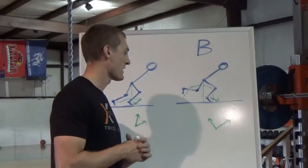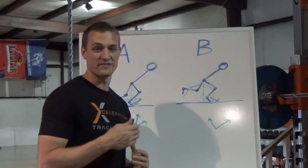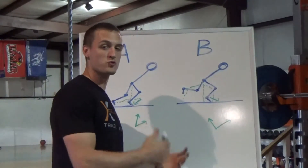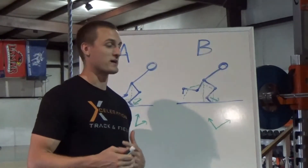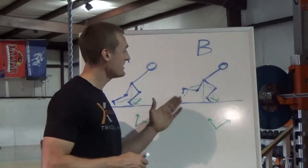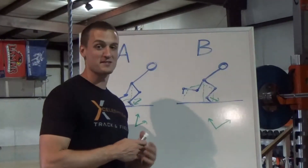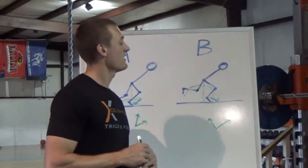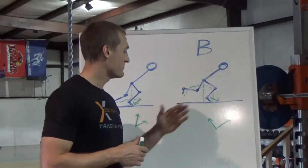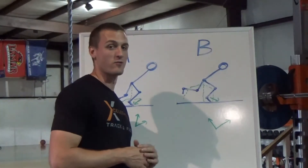Athlete A, in order to accelerate forward, simply pushes forward repeatedly — that's the effective way to accelerate. Athlete B, on the other hand, pushes backwards a little bit and then pushes forward repeatedly — that is the less effective way to accelerate. However, as usual, there is give and take here, meaning you lose one thing, you gain another. So what does athlete B gain from that braking force?